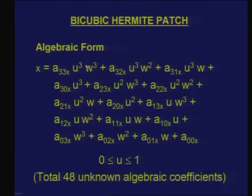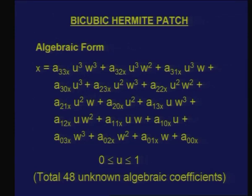In the algebraic form of a parametric cubic curve, x is a function of u with four algebraic coefficients; for x, y, z that gives 12 algebraic coefficients. Now if I want to represent x as a cubic function in both u and w, there are sixteen possible terms: a constant, u, u², u³, and similarly for w and w², w³ — all combinations lead to sixteen unknown coefficients.